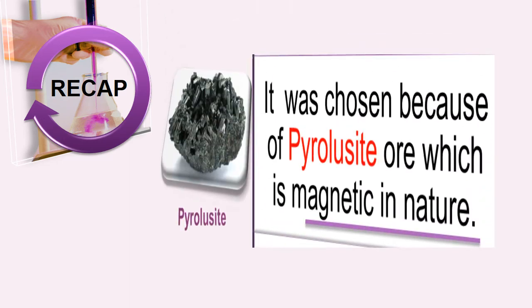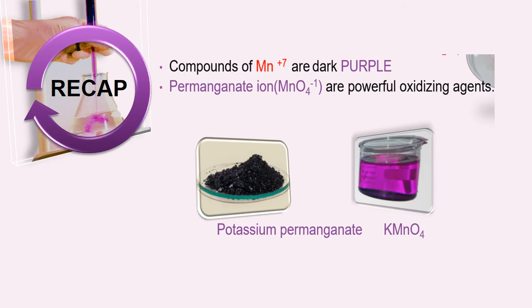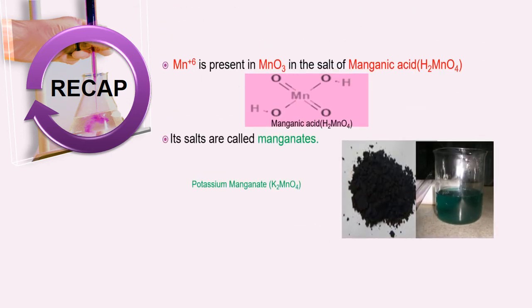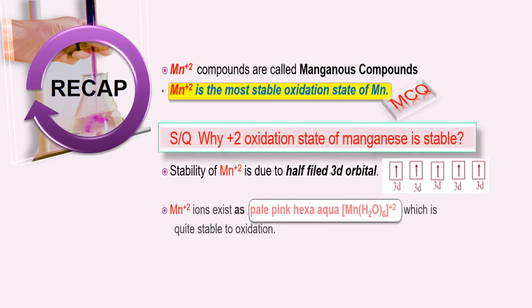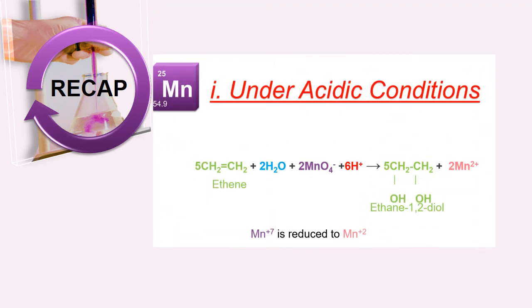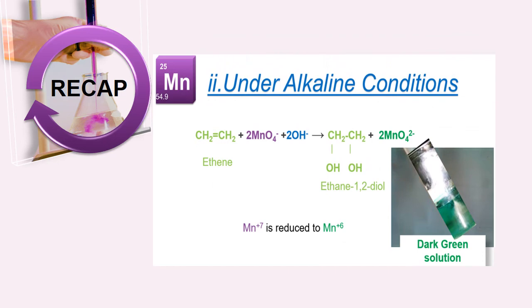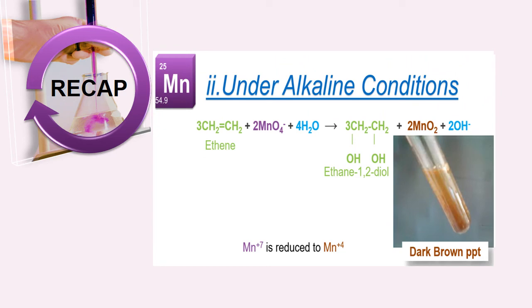Important points from this lecture: Pyrolusite ore is magnetic in nature. The purple permanganate ion is a powerful oxidizing agent. Manganese +6 compounds are green in color. Manganese +2 is the most stable oxidation state due to the half-filled 3d orbital. Under acidic conditions, manganese +7 oxidizes alkenes and is reduced to +2. Under alkaline conditions, manganese +7 oxidizes alkenes and is reduced to +6, which further reduces to +4, forming dark brown precipitates.